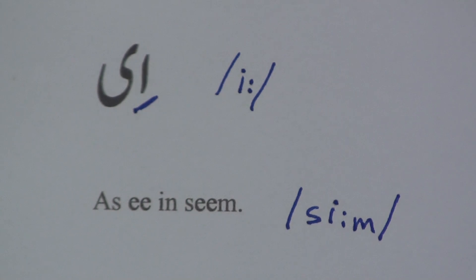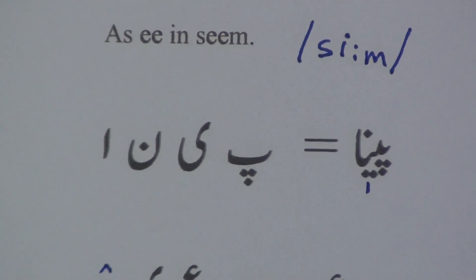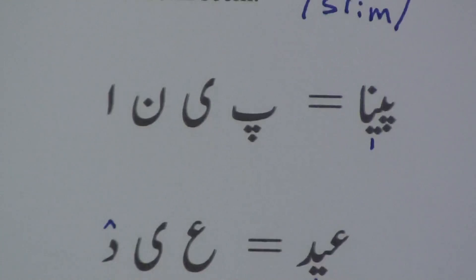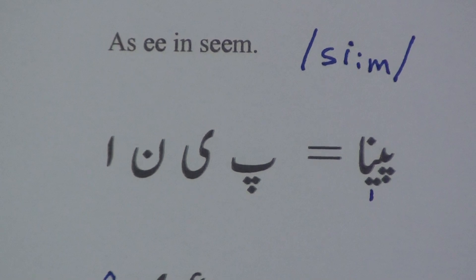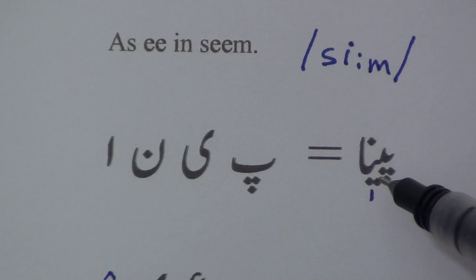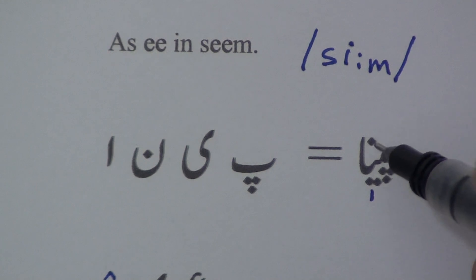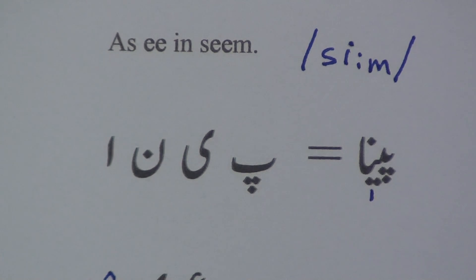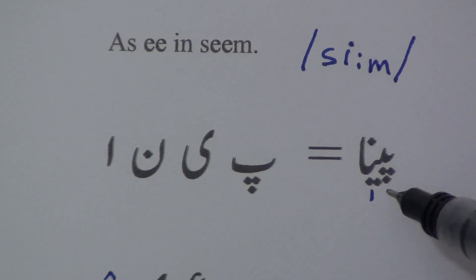Some words: peh and chhoti yee is 'pee.' Chhoti yee is 'pee,' and noon alif is 'na.' So 'pee' with 'na' gives 'peena.' You are looking at this diacritical mark below the letters.